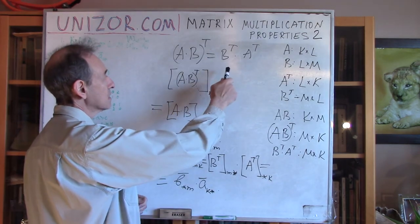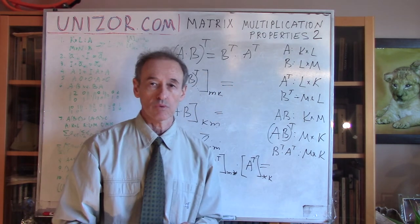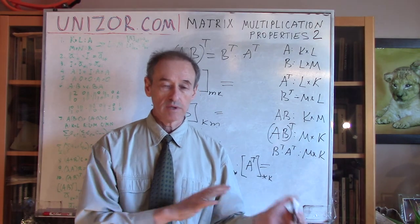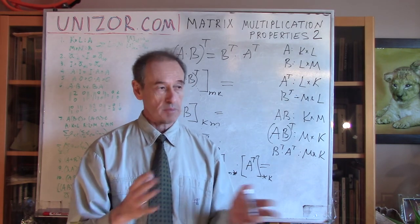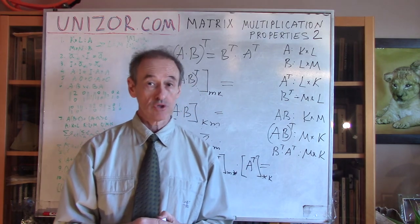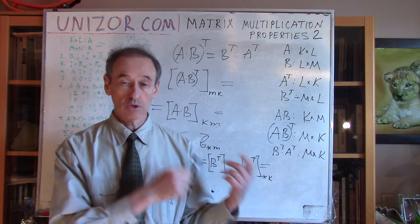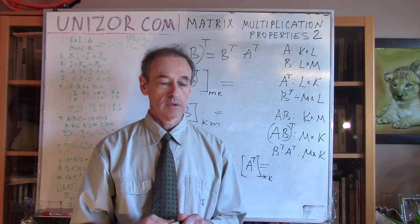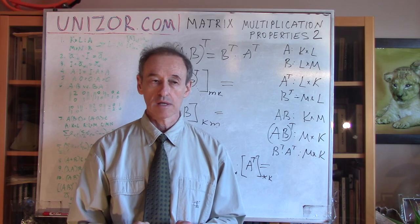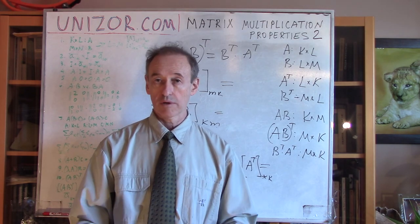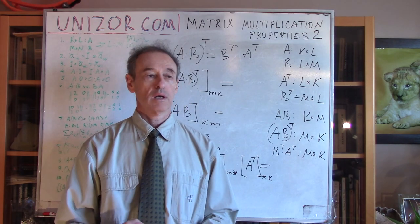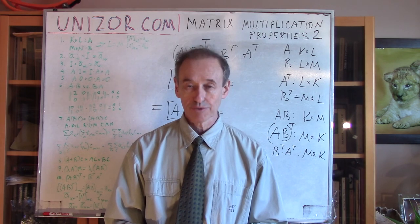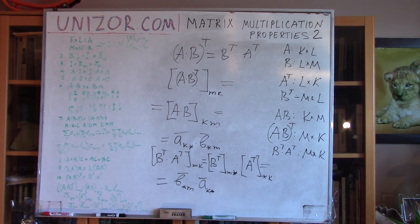So, transposition of a product is a product of the two transpositions in reverse order. That's it for today — this is the end of the elementary properties of matrix multiplication. I suggest you go through the lecture on unizor.com; the notes contain essentially the same content. It would be very useful to work through the proofs yourself without looking at the notes — that's an extremely useful exercise. Thank you very much for your attention and good luck.